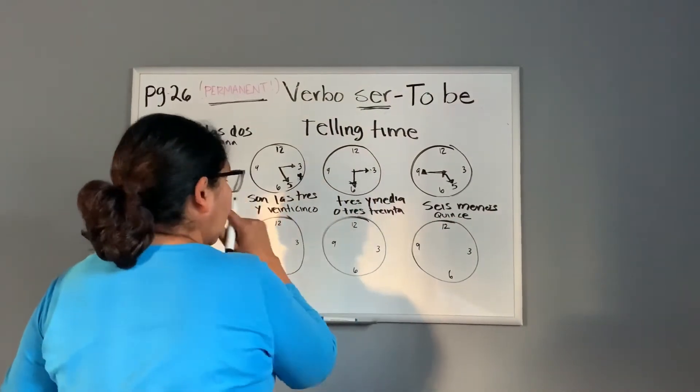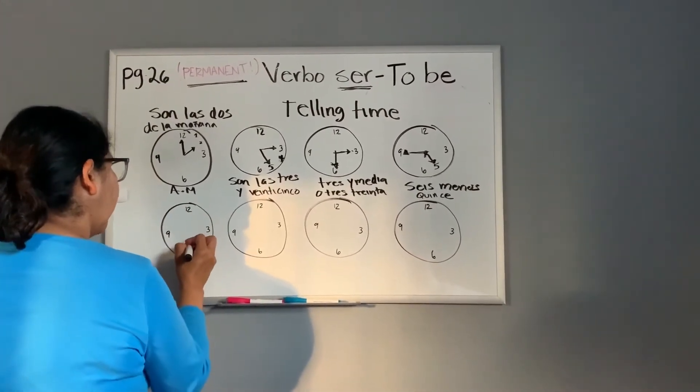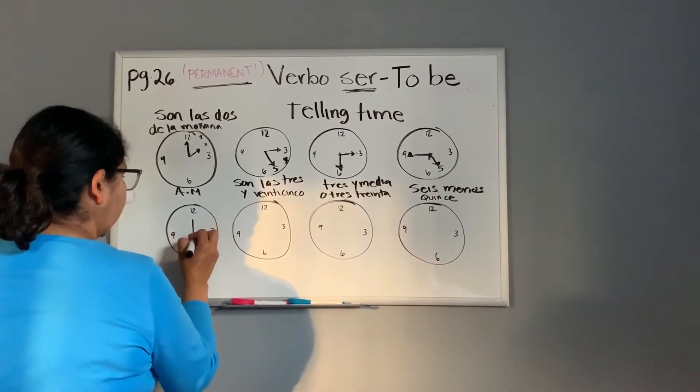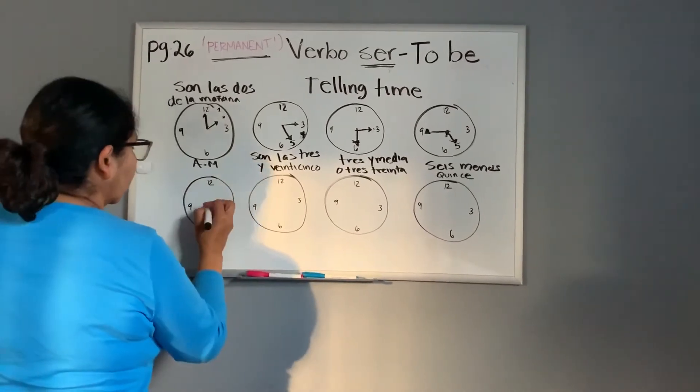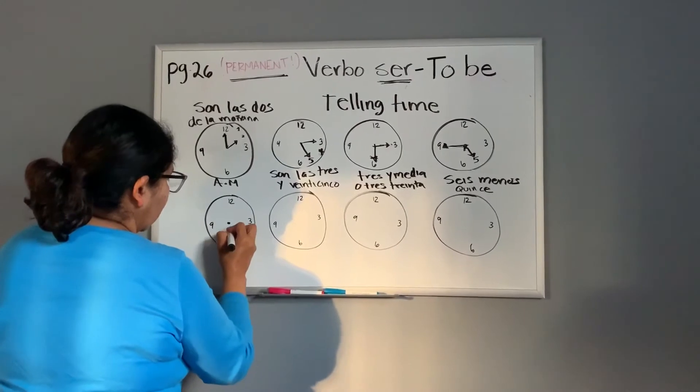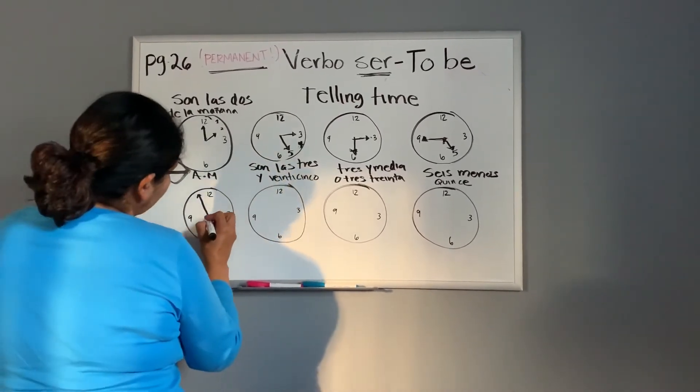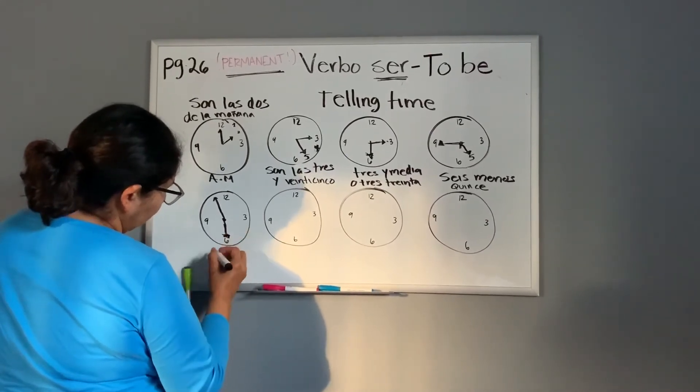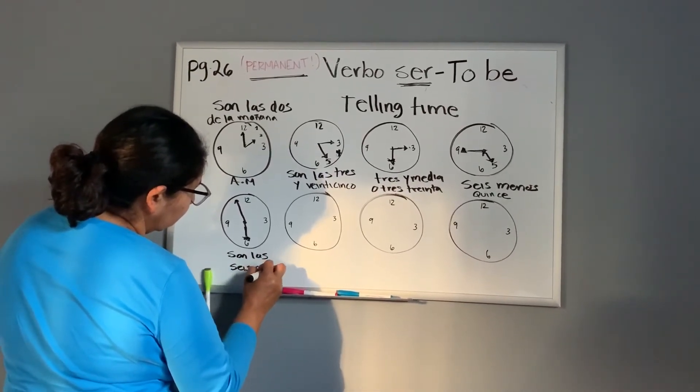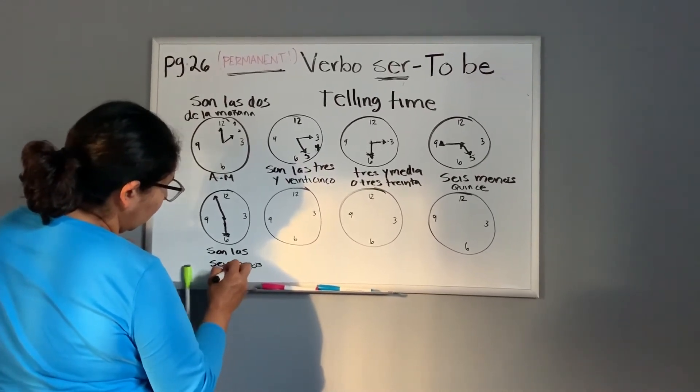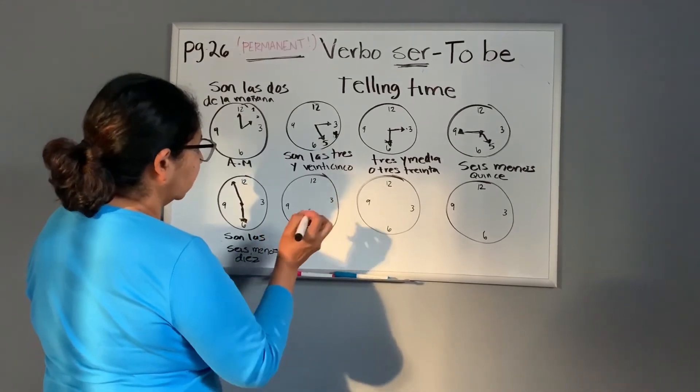Seis menos quince. Let's say five fifty. So, you will say son las seis menos diez. Or, son las cinco, son las cinco cincuenta. Either way is correct.